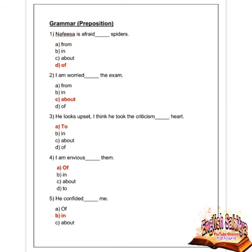Next question: he looks upset — I think he took the criticism to heart — which preposition? Options are to, in, about, and of. Option A is correct — to. He took the criticism to heart. Next question: I am envious of them — which preposition? Options are of, in, about, and to. Option A is correct — of. Next question: he confided in me — which preposition? Options are of, in, about, and to. Option B is correct — in. He confided in me.